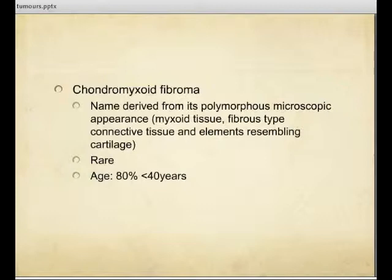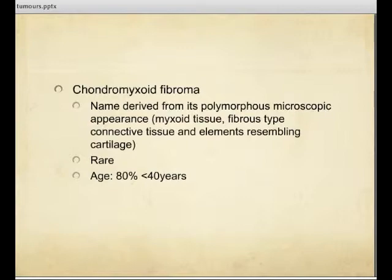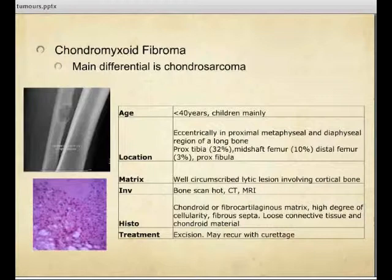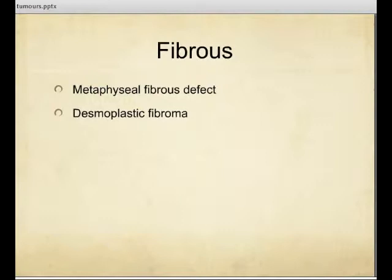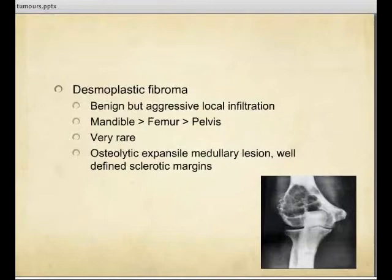Chondromyxoid fibromas are not very common but are also in the chondroid group of benign bone tumours. The name comes from the mix of tissues involved in the microscopic appearance. Treatment is excision. Fibrous lesions include metaphyseal fibrous defect, non-ossifying fibroma, which we see a lot of, and desmoplastic fibroma, which is quite rare but again a benign lesion showing an osteolytic appearance, more commonly seen in the femur and pelvis.